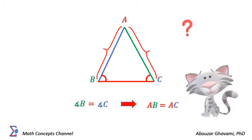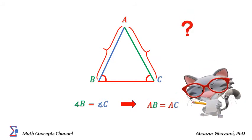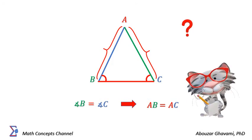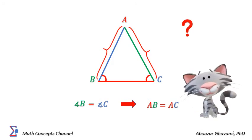Please pause this video now and take a paper and pen and show that a triangle with two equal angles is isosceles.